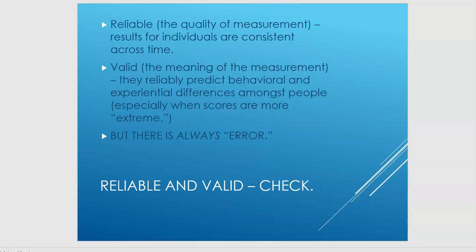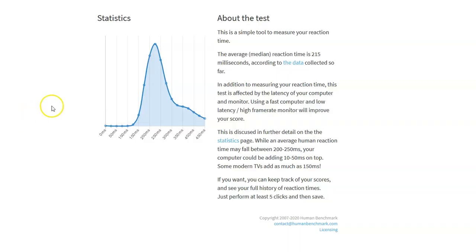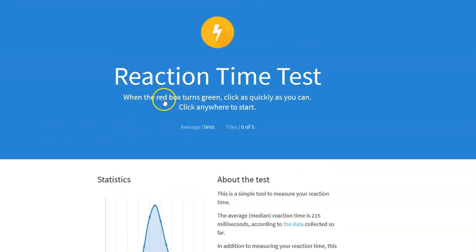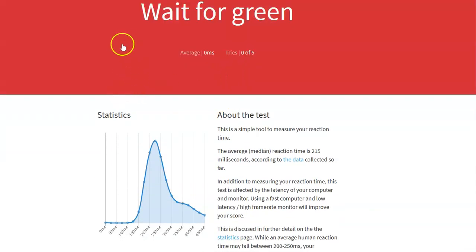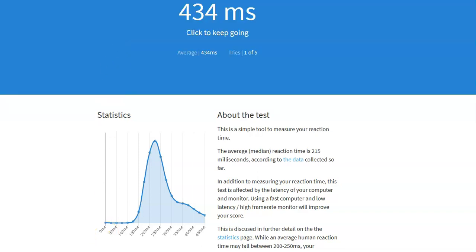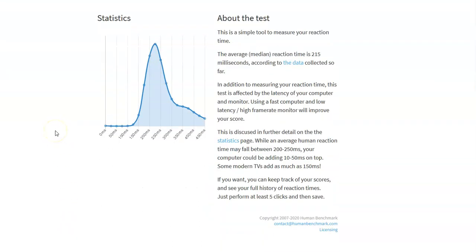So, you might recall that earlier in the semester, we did a reaction time measurement. When the red box turns green, click as quickly as you can, click anywhere to start, and you get five tries. You get five tries, and I'm going to ask you to look at two things. Here is the visual description of the range of scores in milliseconds, average reaction time.